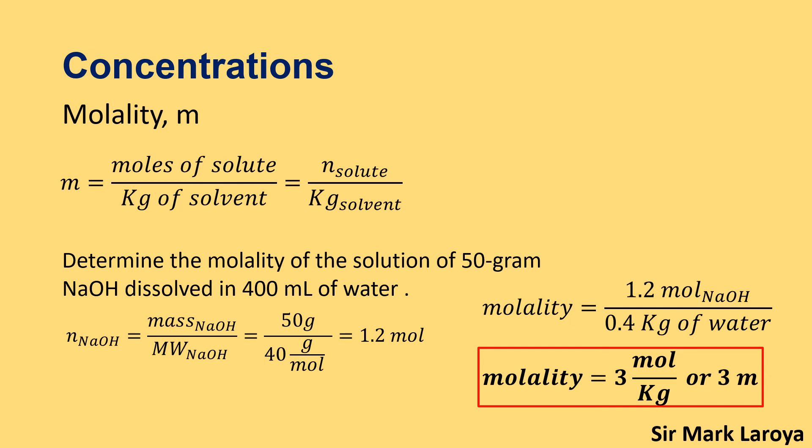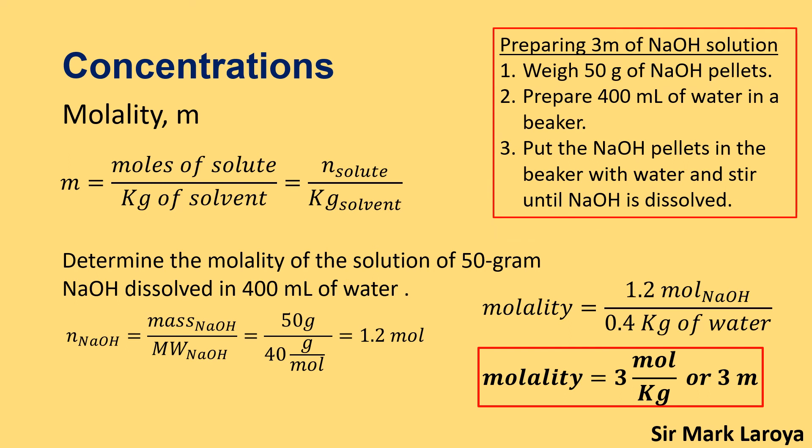So how do we prepare a solution with a concentration of 3 molal? We prepare 3 molal NaOH solution by first weighing 50 grams of NaOH pellets, then preparing 400 ml of water in a beaker — since 400 ml of water equals 400 grams or 0.4 kilograms. Then we put the NaOH pellets in the beaker with water and stir until the sodium hydroxide is dissolved. That is how we prepare a solution with a concentration of 3 molal.